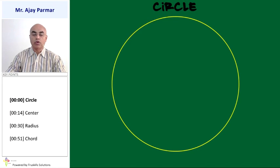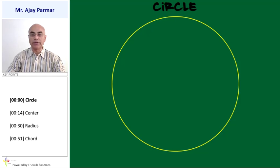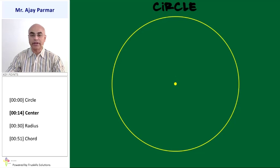The set of coplanar points which are given equidistant from a given point — that set of points is considered to be a circle. The point from where all these points which form the circle are equidistant, that fixed point is known as the center.